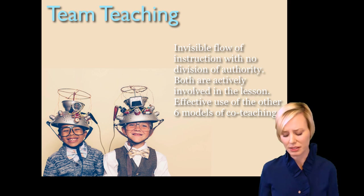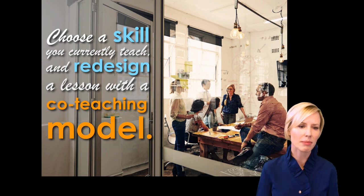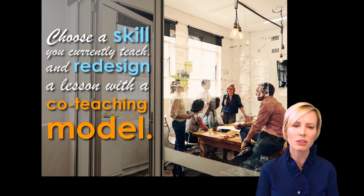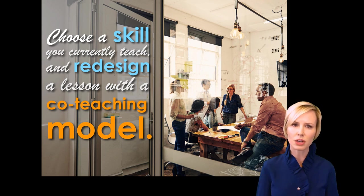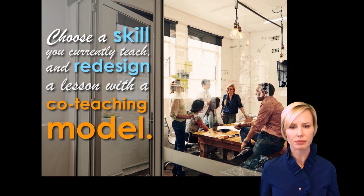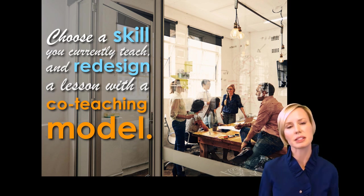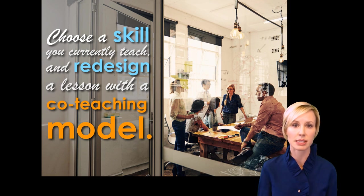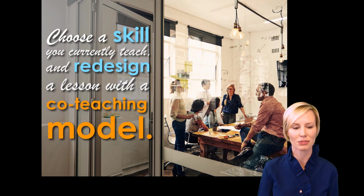What I'd like for you to do next is, in pairs, think about a skill that you currently teach and the way that you currently teach it. Consider which of the models of co-teaching you might try for that lesson — which one might enhance the outcomes you're seeing for students now. How might we use co-teaching, one of the models, to bring in both the expertise of the general educator and a special educator, or an EL teacher, or a reading specialist? How can we bring in the expertise of both people to a lesson you currently teach using one of these models?